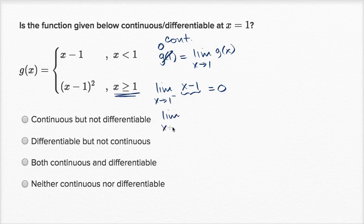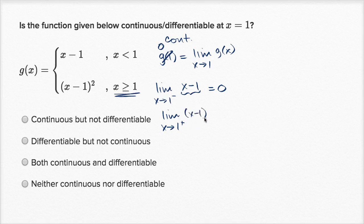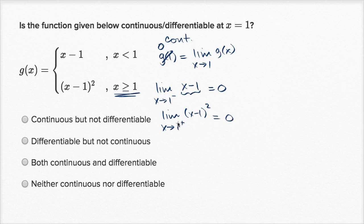Let's approach from the right hand side. As x approaches one from the right, we fall into this case. So g of x, for values greater than or equal to one, is x minus one squared. That is defined and continuous for all real numbers, so we pop one in there: one minus one squared is zero again. So the left hand limit and right hand limit are both equal to zero, which means the limit of g of x as x approaches one equals zero — the same as g of one. We are good with continuity.